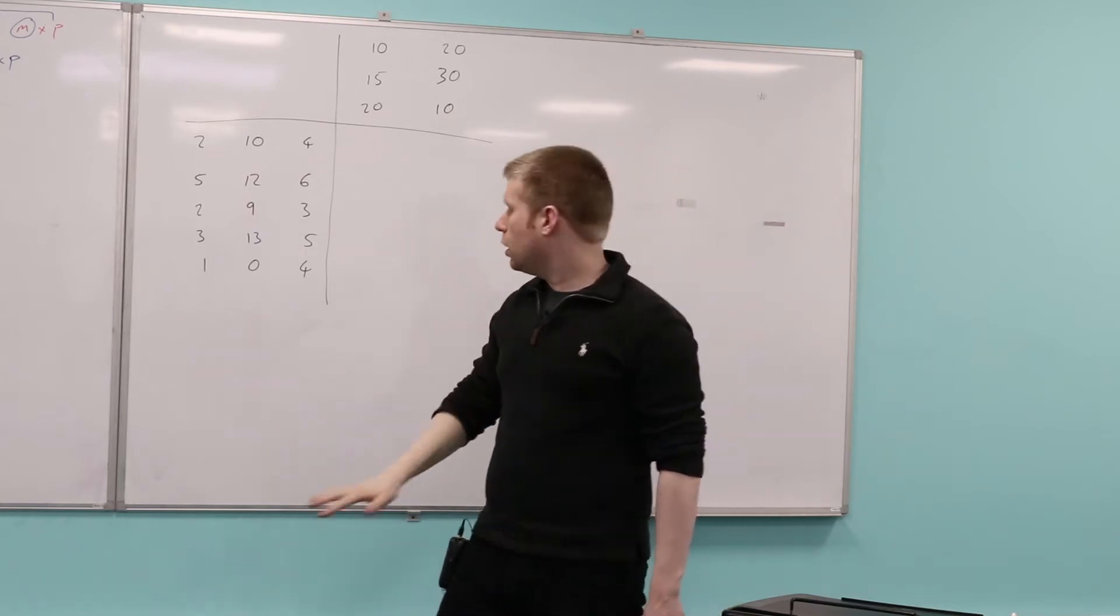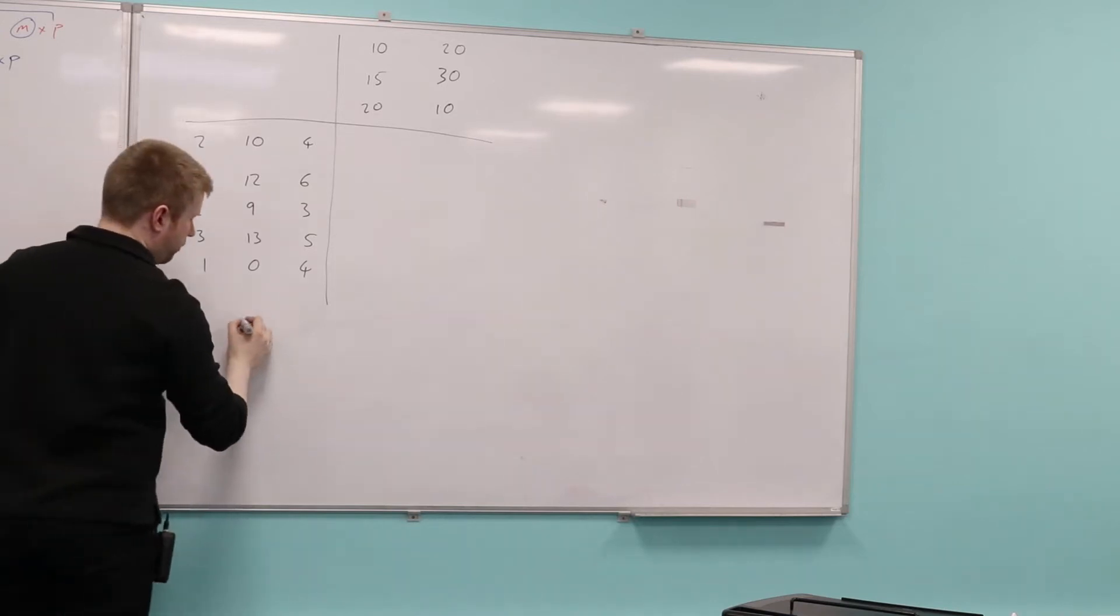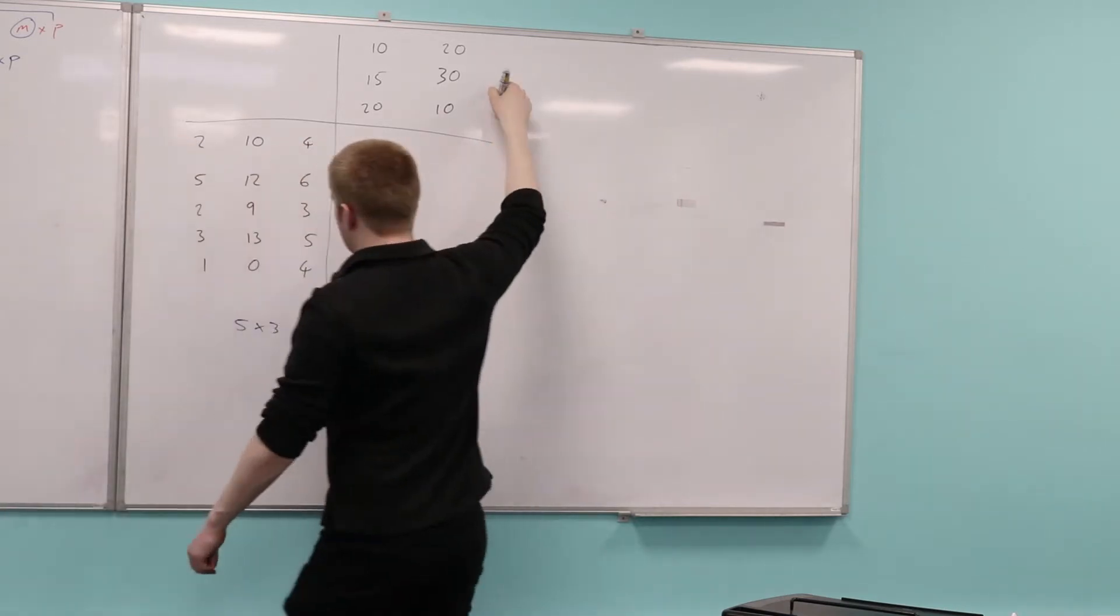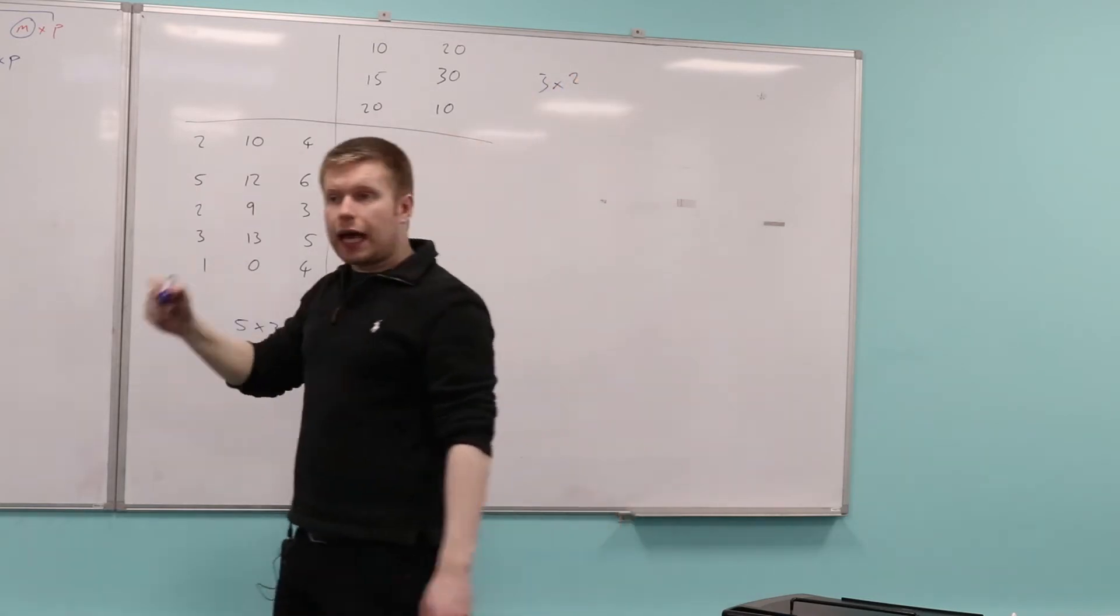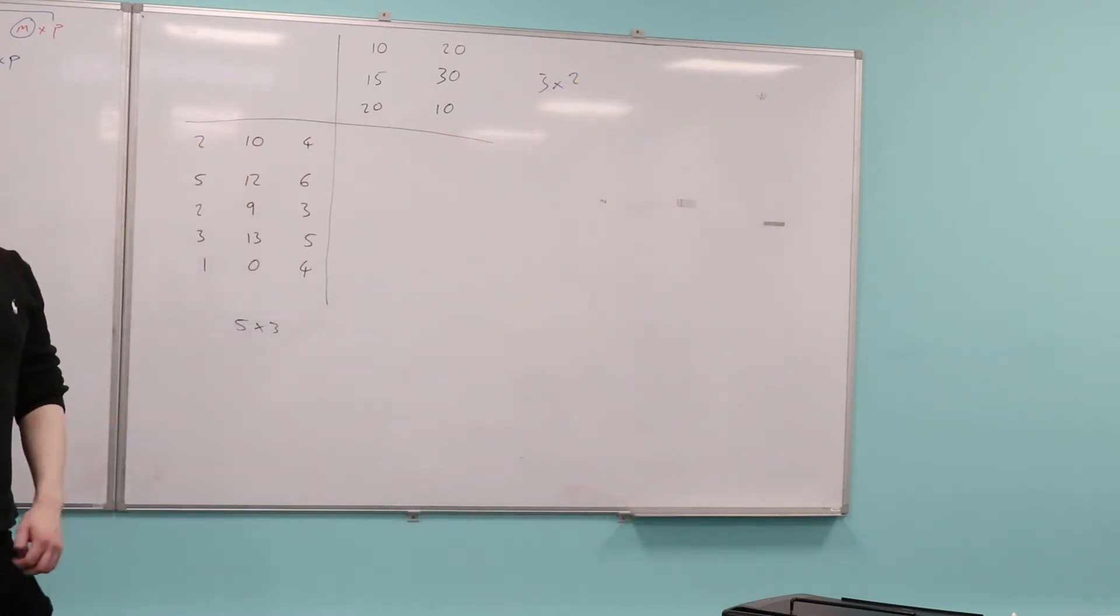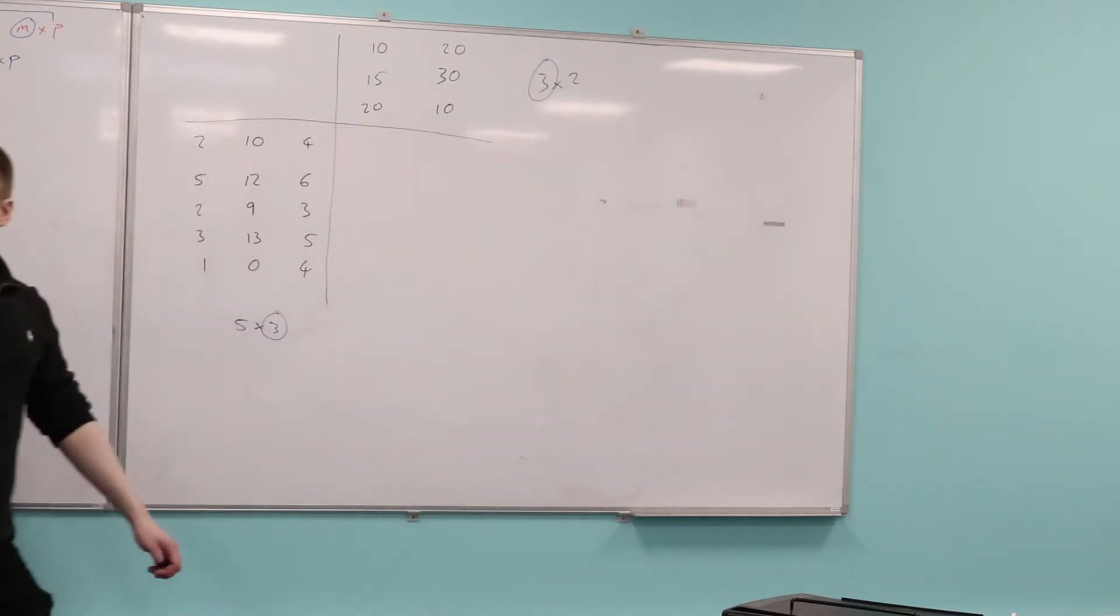What are the dimensions of the first matrix? Five by three. What are the dimensions of this matrix? Three by two. So can I do this matrix multiplication? Yes, because the columns of the first matrix matches with the rows of the second matrix.